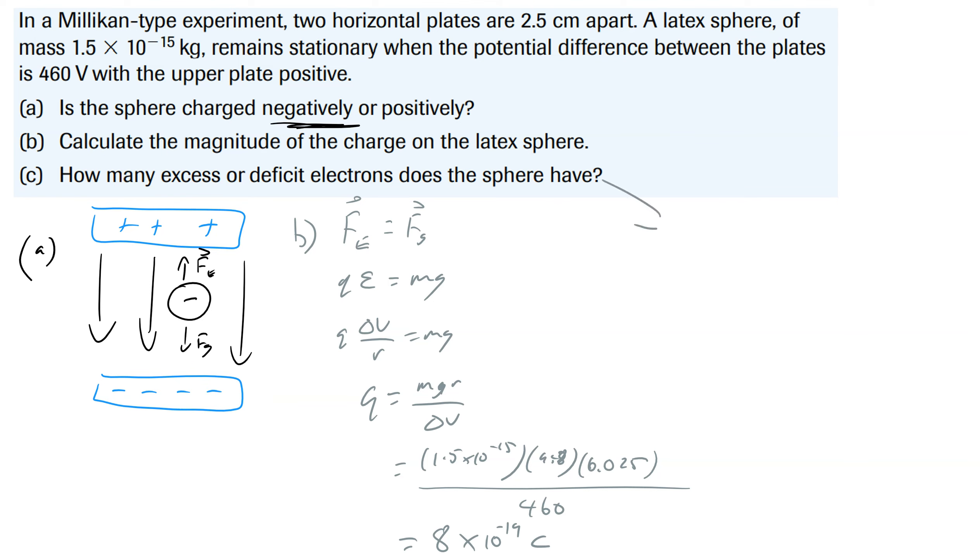So for part C, how many excess or deficit electrons does the sphere have? Well we're going to use our formula q is equal to ne. So we know the total charge in this particular case is 8 times 10 to the negative 19. We don't know n but we know the little e is 1.6 times 10 to the negative 19 coulombs. So when I figure this out and I divide these two together I end up with an answer of 5. So it's got 5 extra electrons.